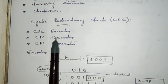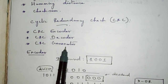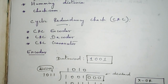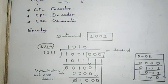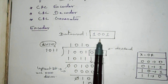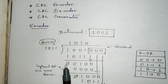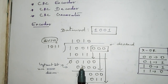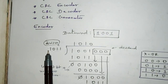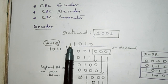In CRC we have an encoder, a decoder, and a generator. The CRC generator is common for both the encoder and decoder. In the encoder we are going to transmit data — the data word is the data which we are going to transmit. We are going to perform a division kind of operation, which is a modulo-2 operation. The divisor is predefined by the CRC generator, which is common for both encoder and decoder.